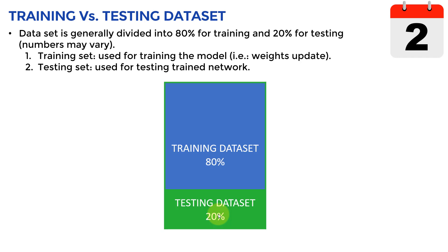This is a very important concept: we want to make sure that AI models are able to generalize and not memorize. For example, if I train a model to classify fashion images, I want to make sure that if I put it in the field on new data the model has never seen during training, it still performs. I don't want the model to just learn all the details of the training data and fail to generalize.